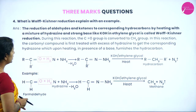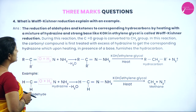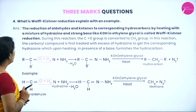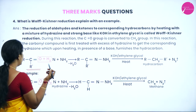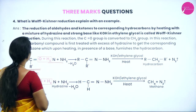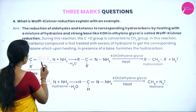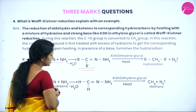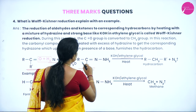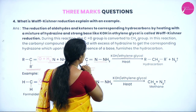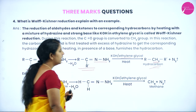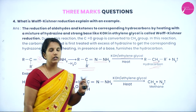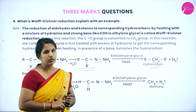What is Wolff-Kishner reduction? The reduction of an aldehyde or ketone to the respective hydrocarbon by heating with a mixture of hydrazine (NH₂–NH₂) and a strong base like KOH in ethylene glycol is called Wolff-Kishner reduction. The aldehyde or ketone reacts with hydrazine with removal of water to form R–C(=NNH₂)–R′, and upon further treatment with strong base in ethylene glycol, nitrogen gas is removed and a CH₂ group is formed, giving a simple hydrocarbon.